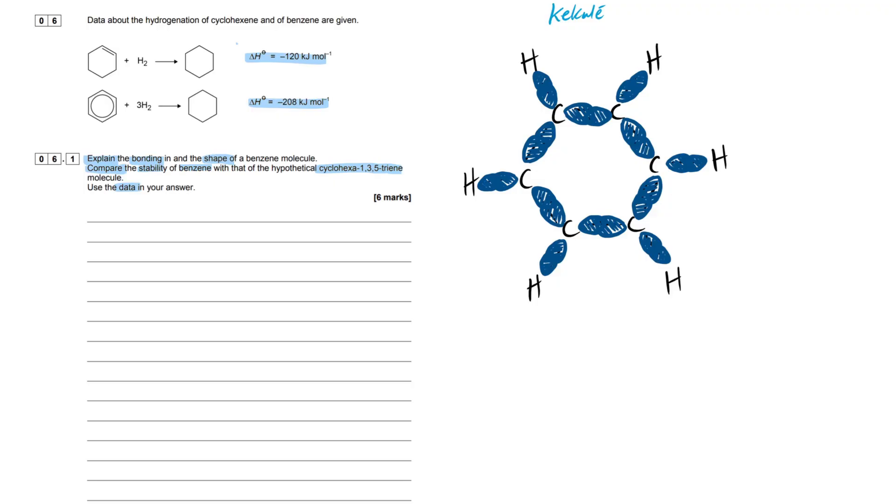I've drawn in the orbitals. Forget the double bonds for a second - these are all sigma bonds. Each carbon is surrounded by three covalent bonds, all sigma bonds, just a shared pair of electrons. Sigma bonds are a lot stronger than pi bonds because the orbitals overlap.